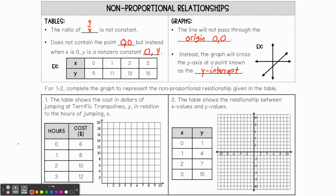The Y-intercept. So you notice here, the Y-intercept is below zero, zero. Sometimes it could be above. Sometimes it could be below. Number one. So let's take a look at what this means graphically. The table shows the cost in dollars of jumping at terrific trampolines, Y, in relation to the hours of jumping X. So here's our X values. Here's our Y values. Let's go ahead and graph.